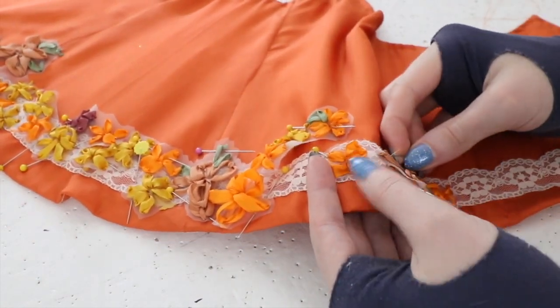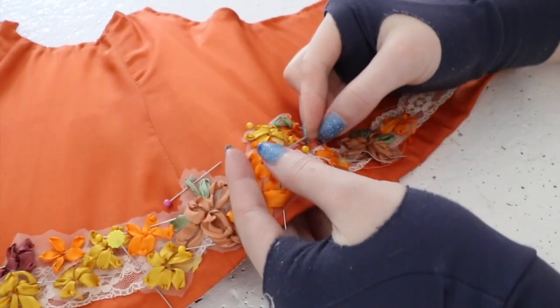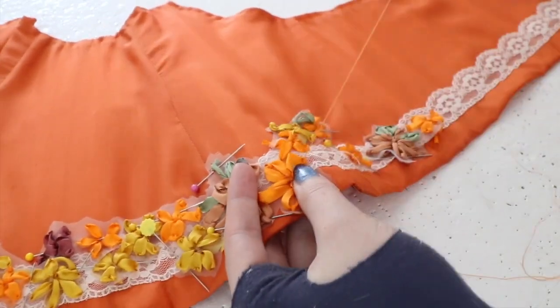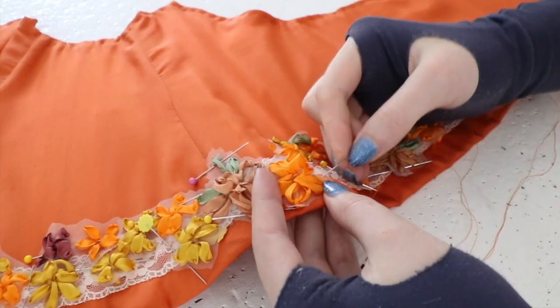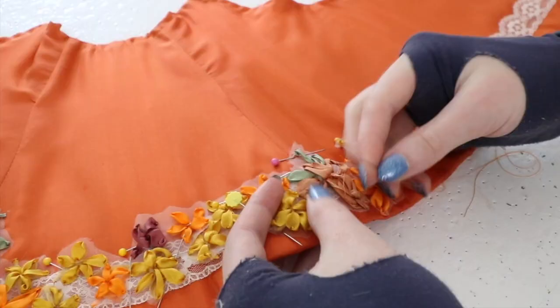They were all stitched on by hand, and I focused my stitches around the flowers, not the edges of organza. My stitches were spaced pretty far apart, and resembled basting stitches more than anything else. And that's because the appliques will be reinforced with sequins and beads later on. Lots of sequins and beads, to be exact.